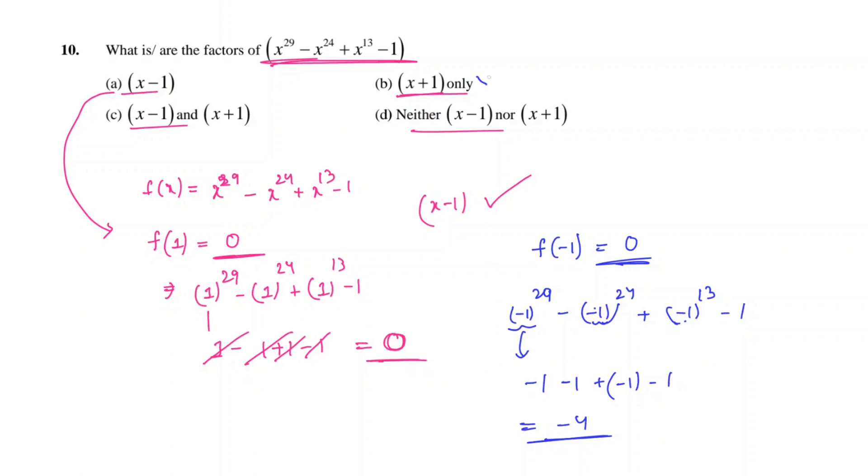Hence, x plus 1 cannot be the factor. Only x minus 1 will be the factor which makes option a the correct choice.